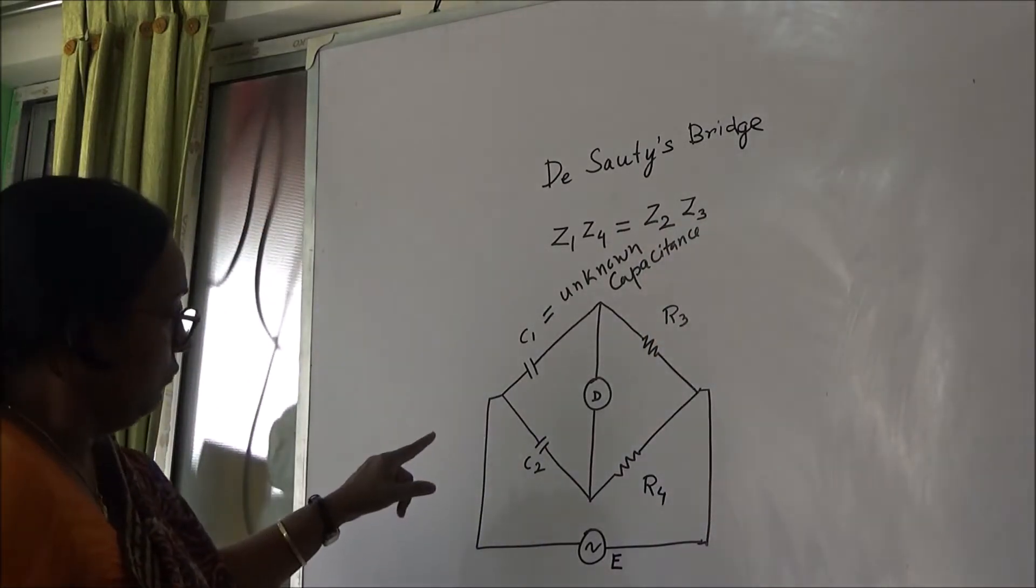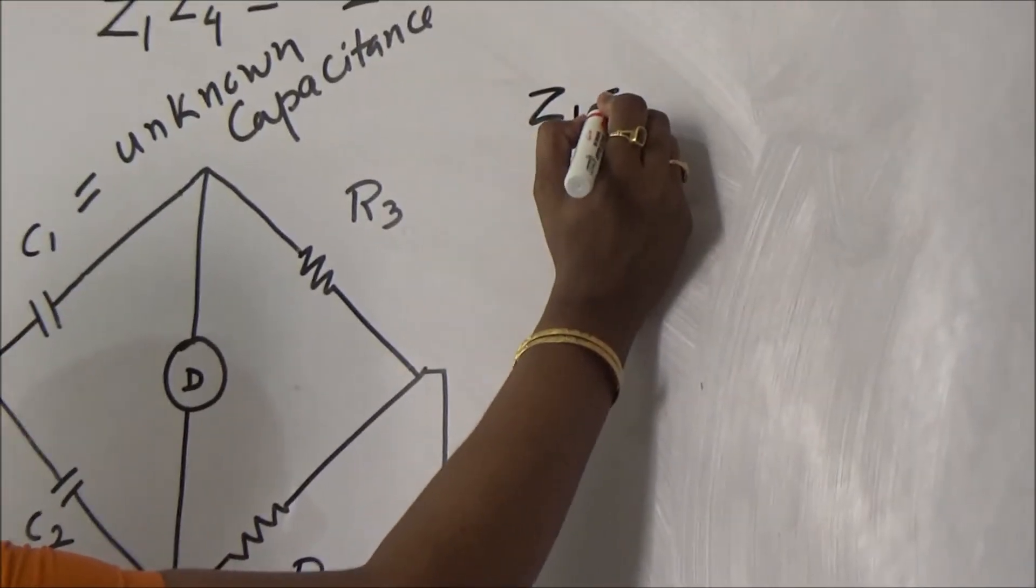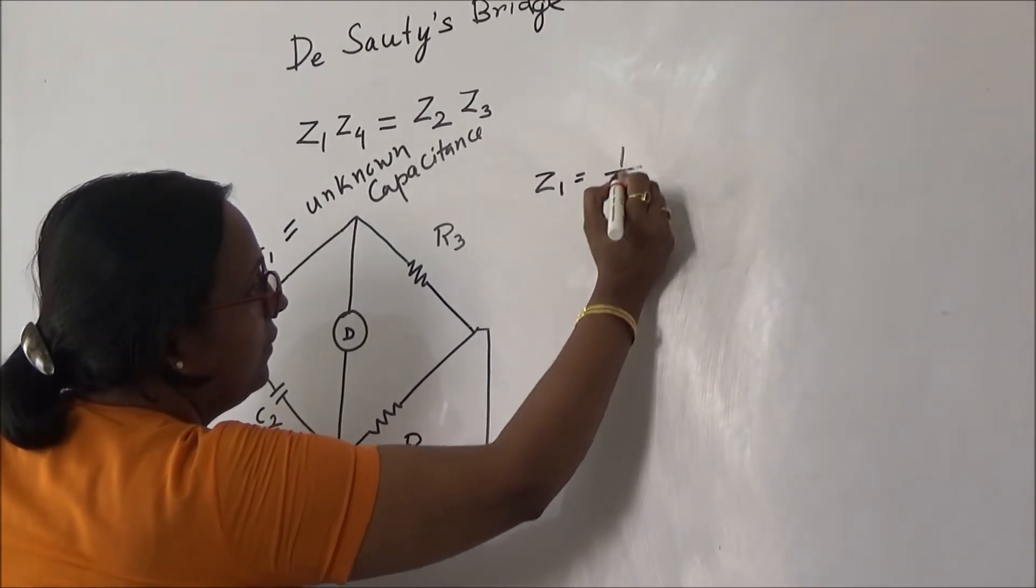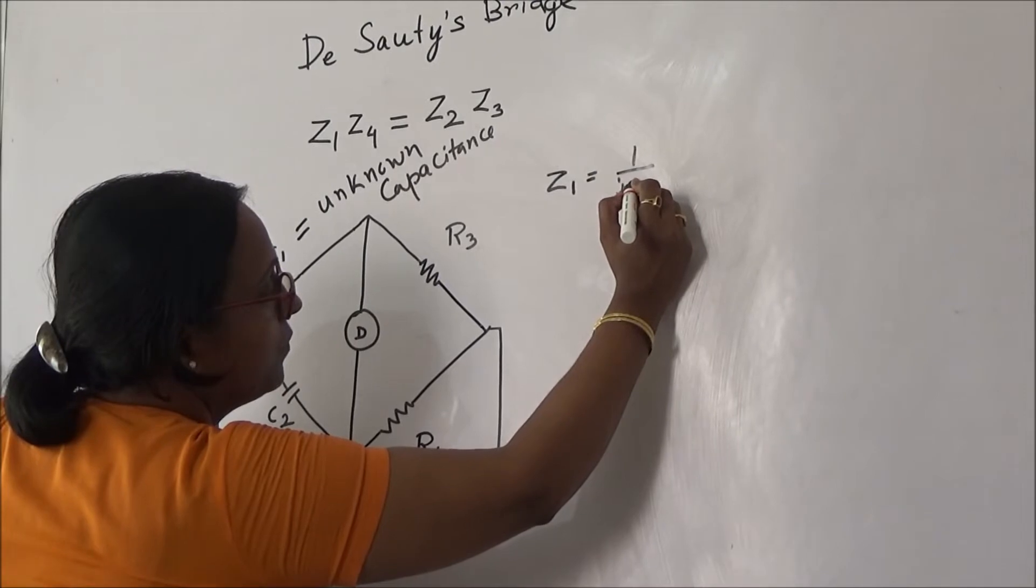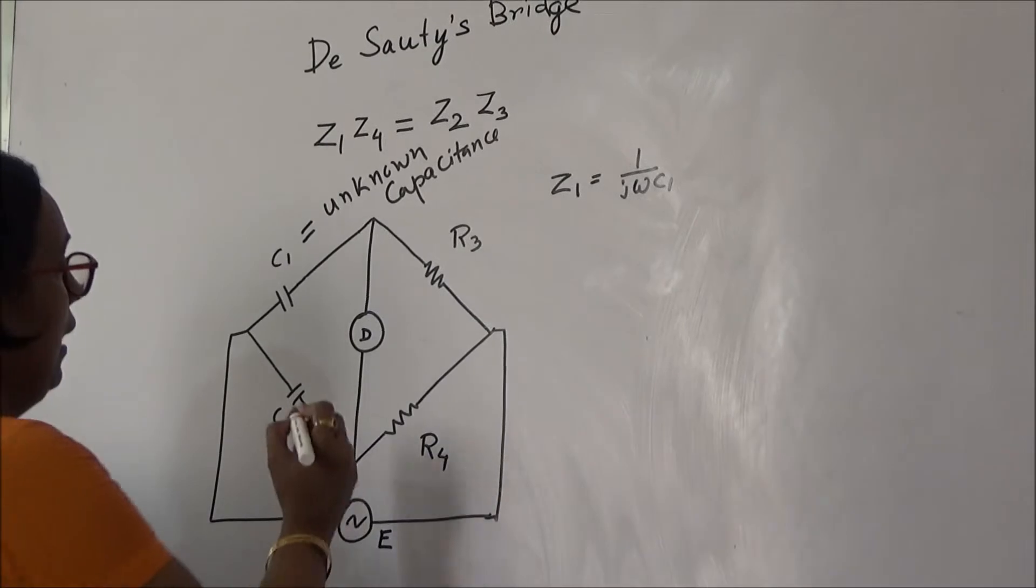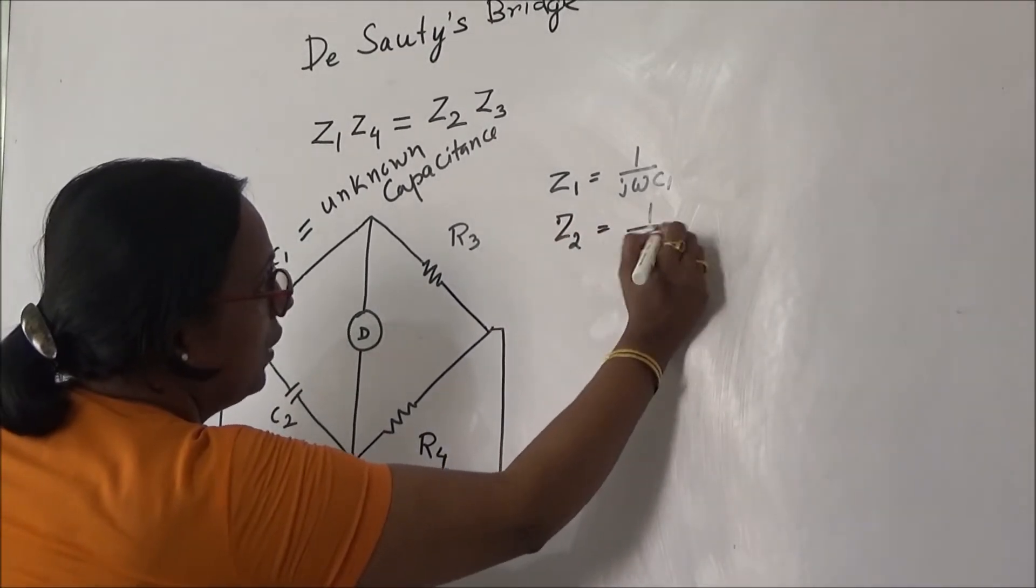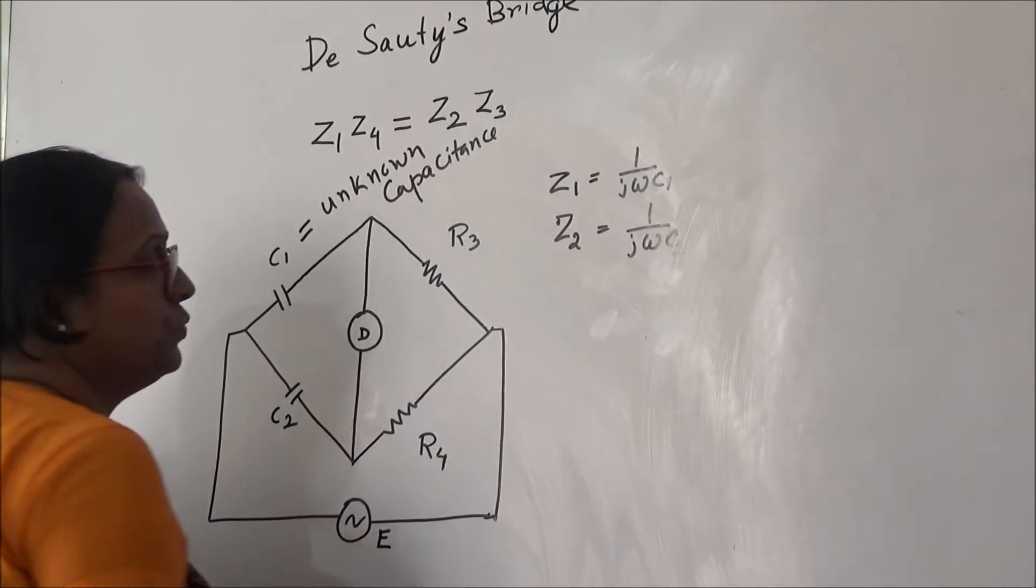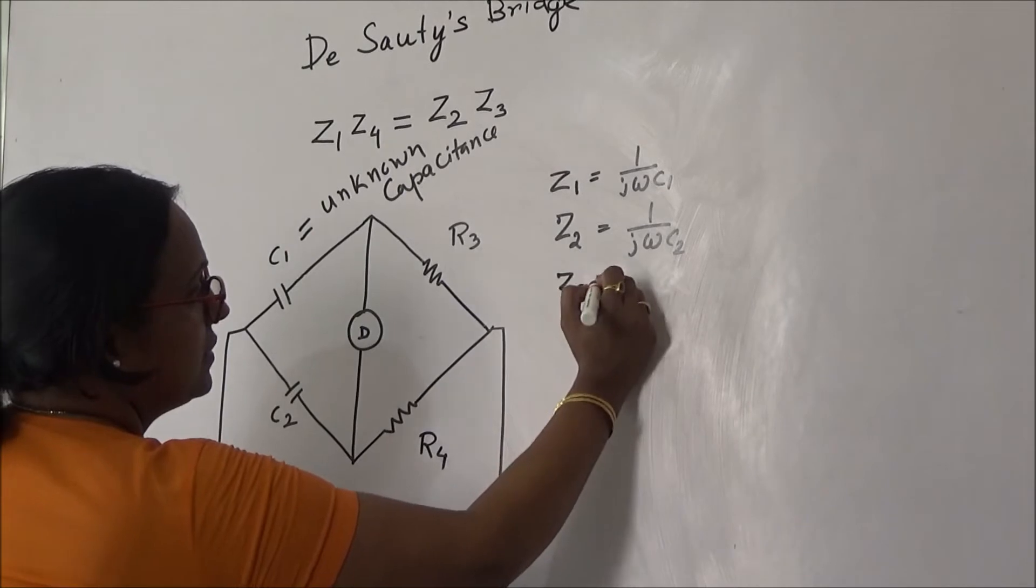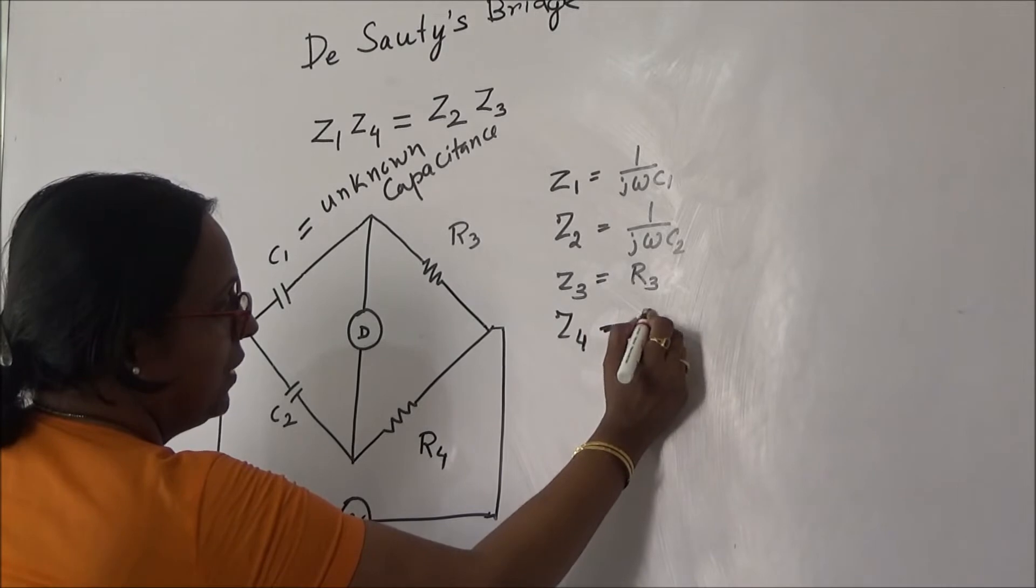So point out the values of Z1 and Z2. What is Z1? Z1 is equal to 1/(jωC1). Similarly, Z2 is equal to 1/(jωC2). Z3 is equal to R3 and Z4 is equal to R4.